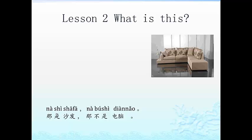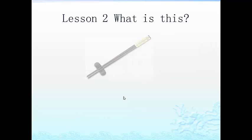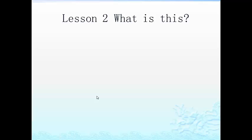这是汉堡. 那是沙发. 那不是电脑. We can make more sentences: 那是沙发, 那不是筷子 — that is not chopsticks. 那不是汉堡 — that is not a hamburger. 那不是包 — that is not a bag or purse. 这是筷子, 这不是包, 这不是手机.